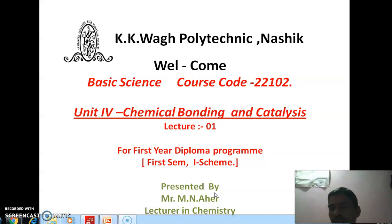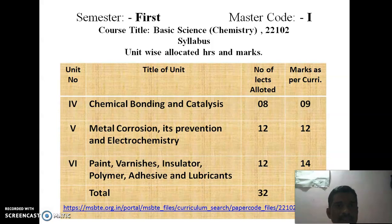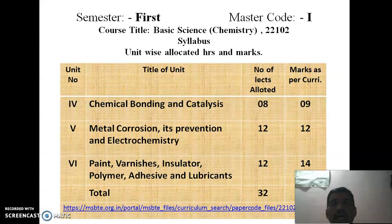The basic science subject is divided into two parts: Basic Physics and Basic Chemistry. The syllabus for basic science is available in a combined state covering both physics and chemistry. Units 4, 5, and 6 are basic chemistry.